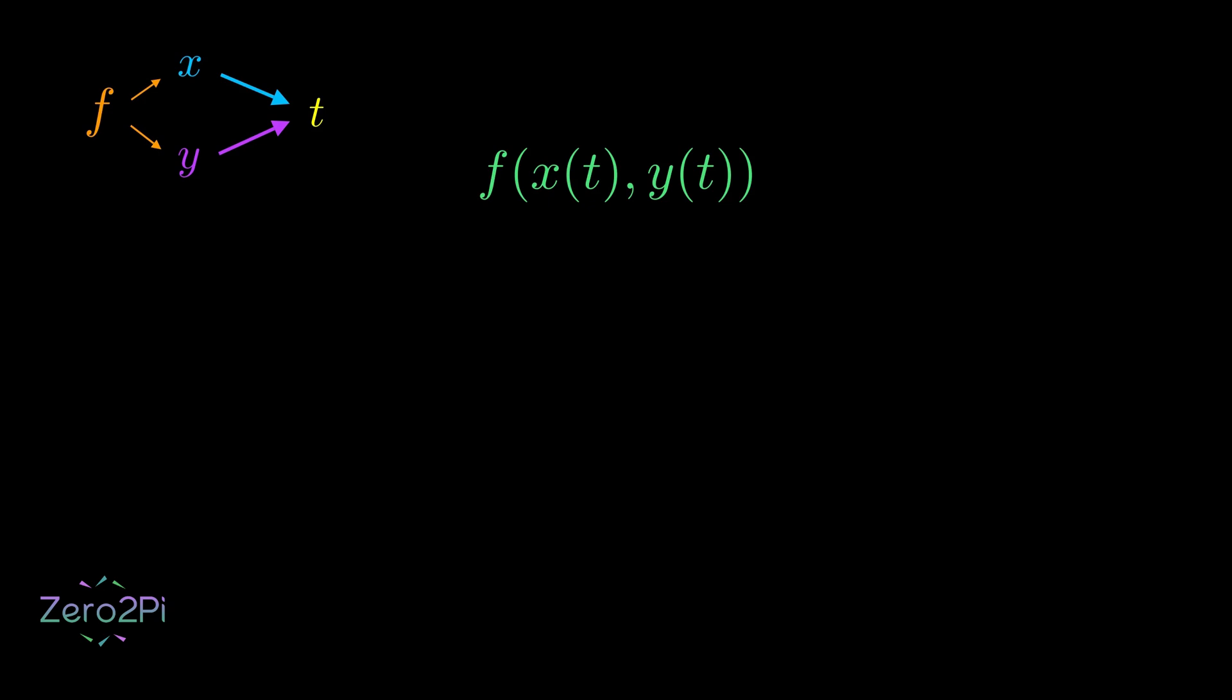how much does f change? In this case, just taking the partial derivatives with respect to x and y isn't enough anymore because a change in t affects both. We need to account for both paths and find the total change in f with respect to t.